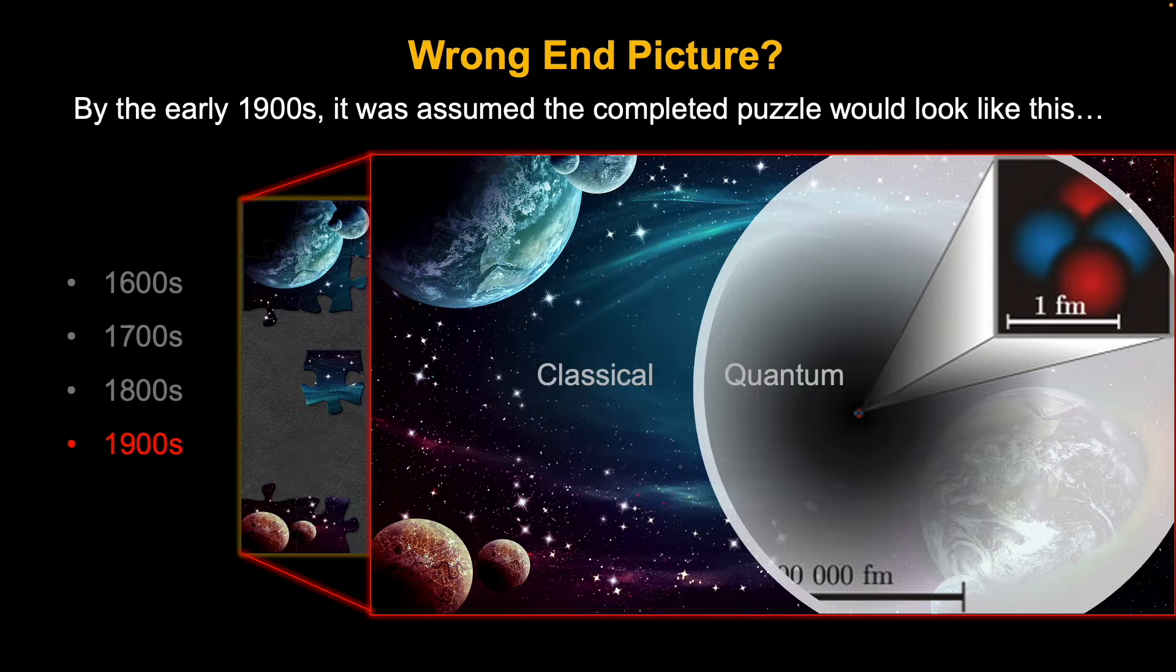By the early 1900s, the puzzle pieces were really starting to come together. Einstein's work on energy and matter occurred at the turn of the century. But then by the 1920s, the quantum revolution began to form. It became a roadmap, like the end picture of this jigsaw puzzle was already known.